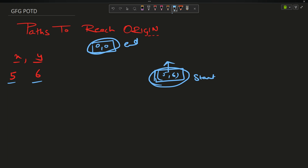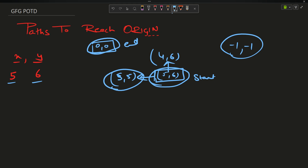The only options allowed are: move upward — your row number decreases, so you become (4,6) — or move left — your column number decreases, so you become (5,5). You cannot go below zero; x and y must always be greater than or equal to 0. The problem asks for the total number of ways to reach the origin.